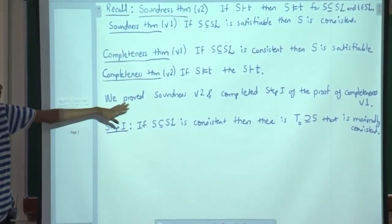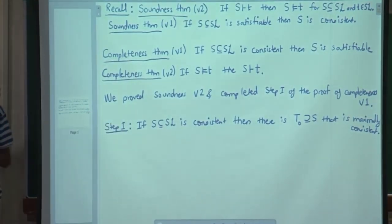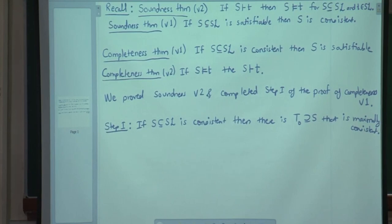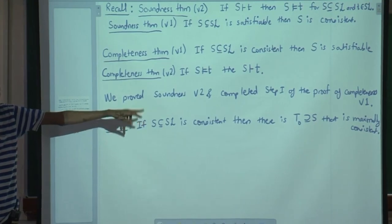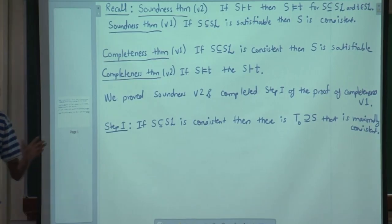We have completed the proof of step 1 of the proof of the completeness theorem version 1. We showed yesterday, using Zorn's Lemma, that if S is consistent, then there is a maximally consistent extension of S. And our job today is to prove step 2.